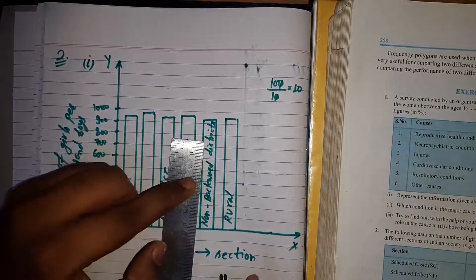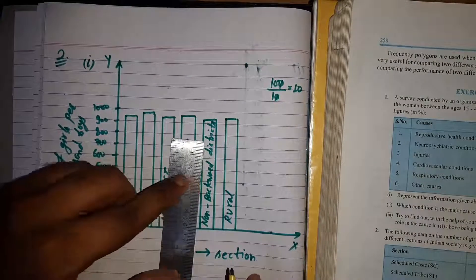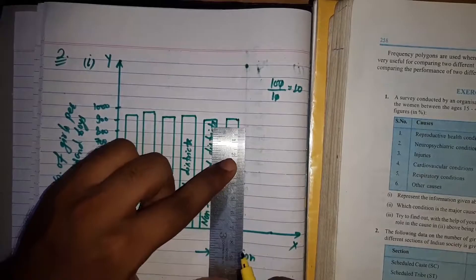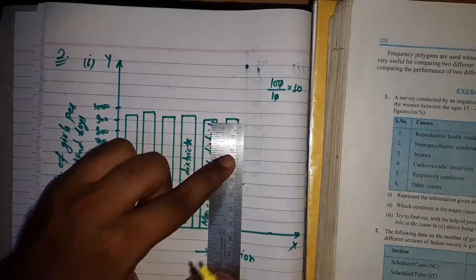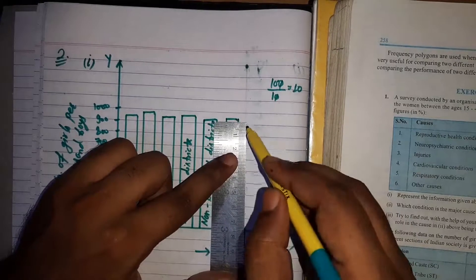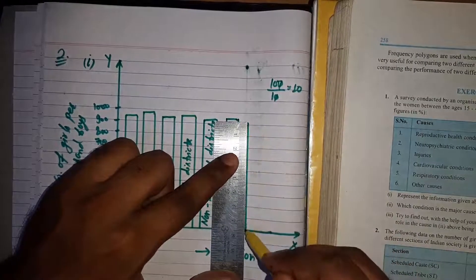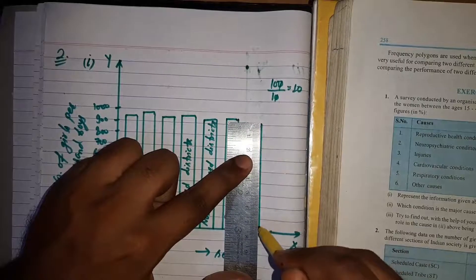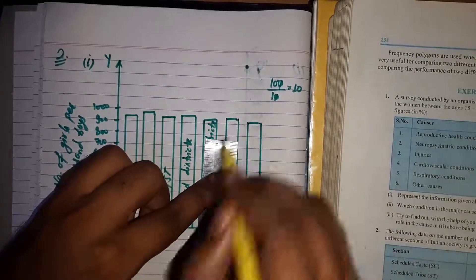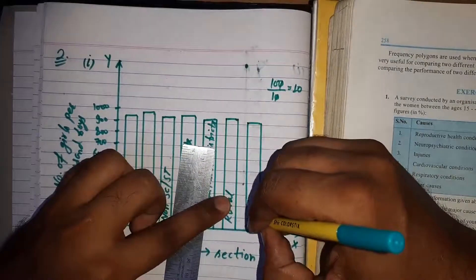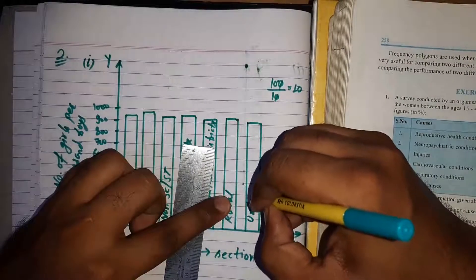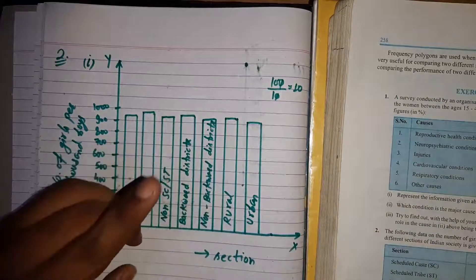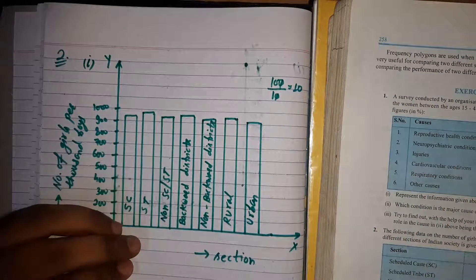Urban has frequency 910, so we take the 1st line between 900 and 1000 to represent 910. This completes the bar graph for Question 2, Part 1.